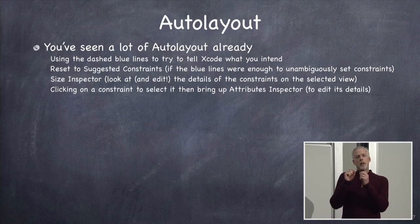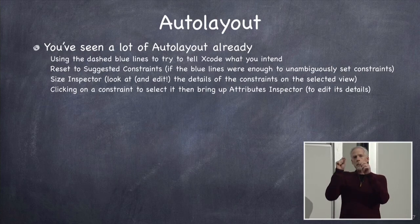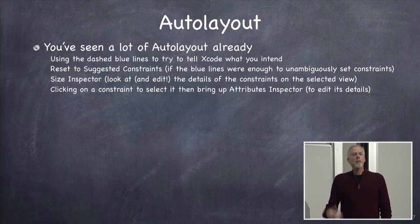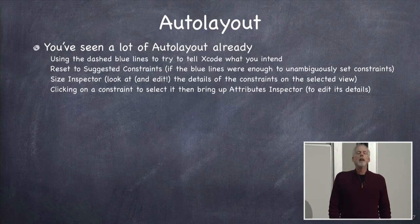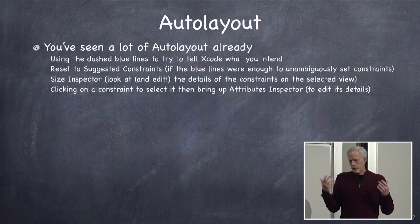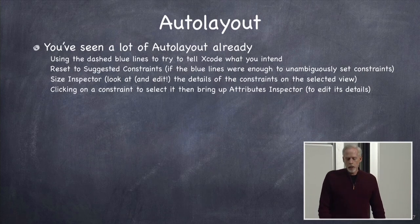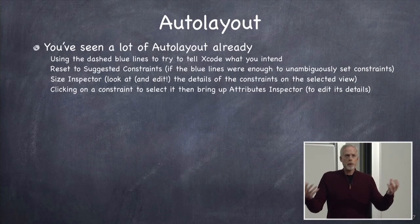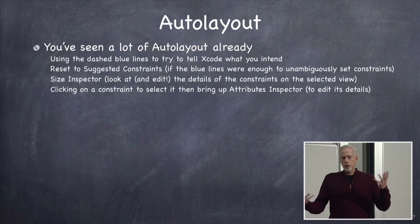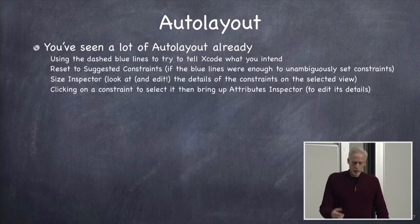You also know that you can click on the constraint itself — the little I-beams — click on them and bring up the inspector. You can see a lot of detail about them: what the constants are, what's on either end, in other words, what the two things being involved in the constraint are.